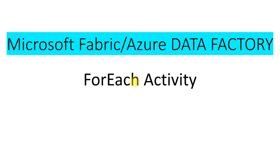Welcome back to Dataverse Solution. In this lecture I will show you a demo on the ForEach activity in Microsoft Fabric Data Factory. The ForEach activity defines a repeating control flow in a data factory pipeline. This activity is used to iterate over a collection — a collection means a list of values — and execute a specific activity in a loop. For example, if you have a list of values, you can iterate over each value in that list.